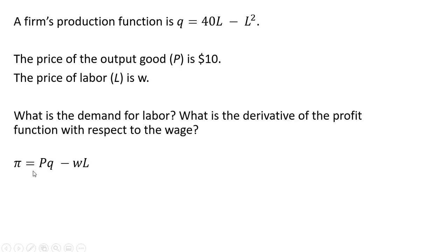Let's create our profit function. Price times quantity is revenue and subtract out the cost. Here we're only looking at variable costs, the wage times units of labor. For P we're plugging in the $10 and for Q we're plugging in 40L minus L squared and then again we're subtracting our variable costs. We're ignoring fixed costs.